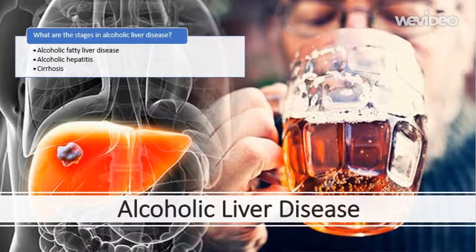There are three main stages of alcoholic liver disease, though there is often a considerable overlap between each stage.